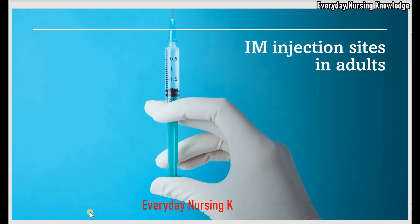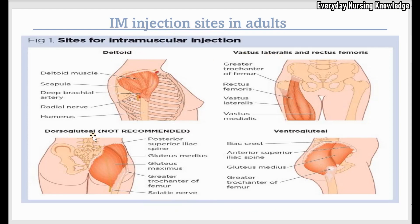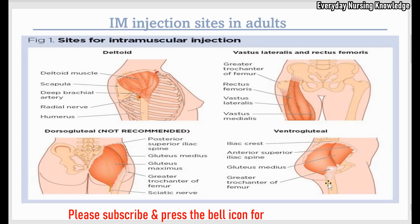Welcome to Everyday Nursing Knowledge Lectures. Today we will learn intramuscular injection sites in adults. The four intramuscular injection sites in adults are: the deltoid muscle of the upper arm, vastus lateralis muscle of the thigh, dorsogluteal muscle of the buttocks, and ventrogluteal muscle of the hip.